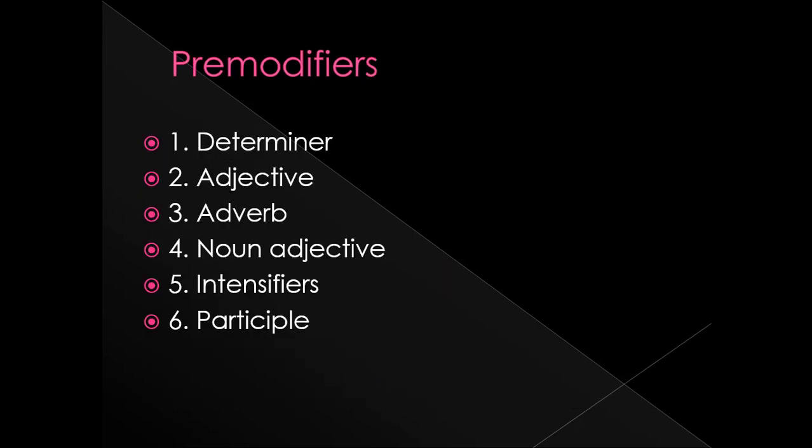There are six items that function as pre-modifiers: determiner, adjective, adverb, noun adjective, intensifier, and participle. Some of these may be new to you, like determiner, noun adjective, and intensifier. But don't worry — we will discuss each item elaborately so everything will become very clear.